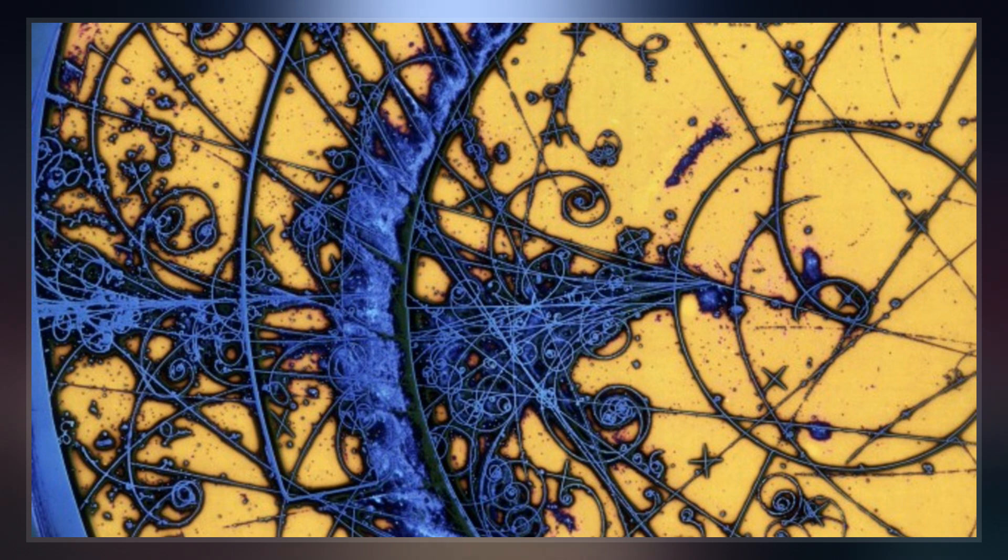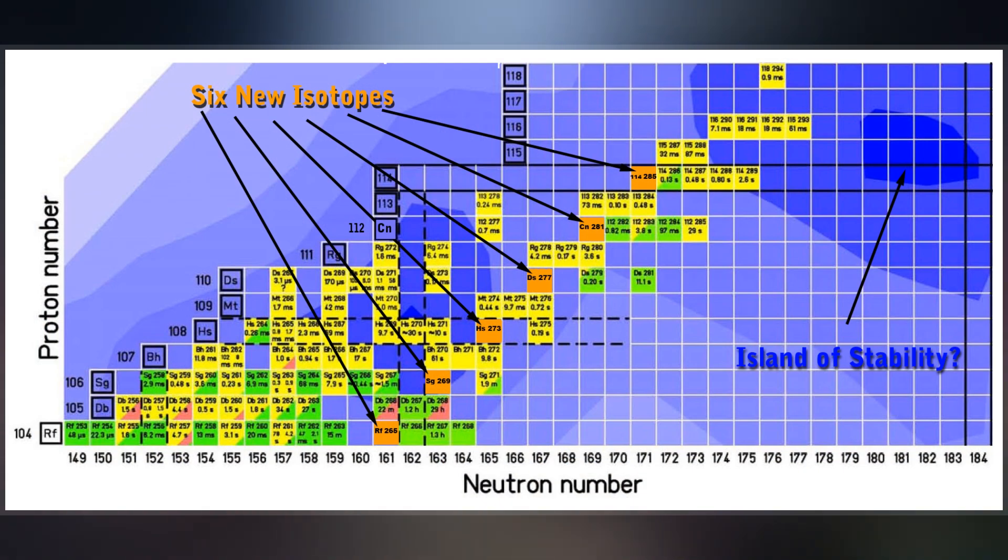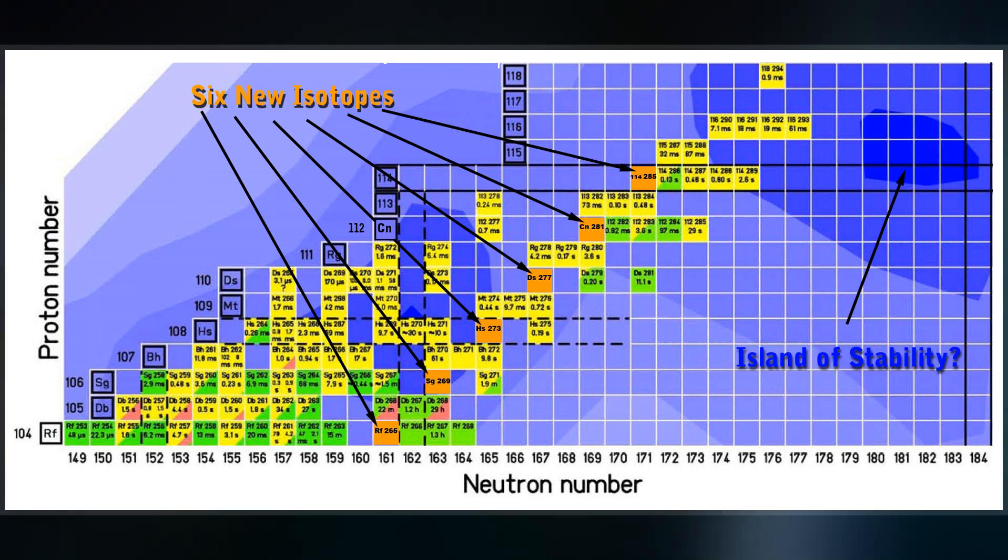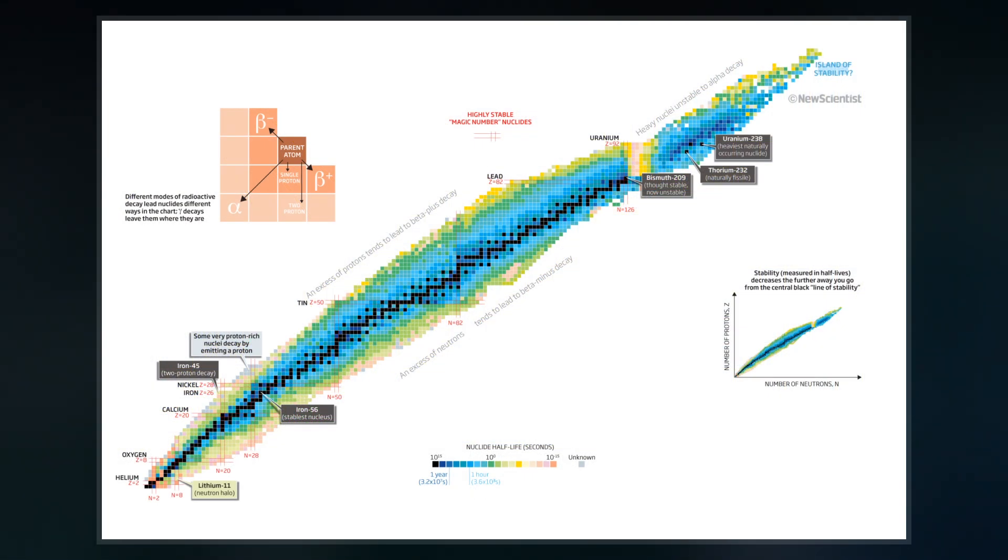Several predictions have been made regarding the exact location of the island of stability, though it is generally thought to center near copernicium and flerovium isotopes in the vicinity of the predicted closed neutron shell at N equals 184.